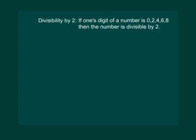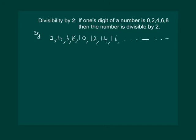Divisibility by 2. If the 1's digit of a number is 0, 2, 4, 6, or 8, then the number is divisible by 2. Let us see the multiples of 2: we have 2, 4, 6, 8, 10, 12, 14, 16, 18, and so on. We can see that the 1's digit is always 0, 2, 4, 6, or 8.